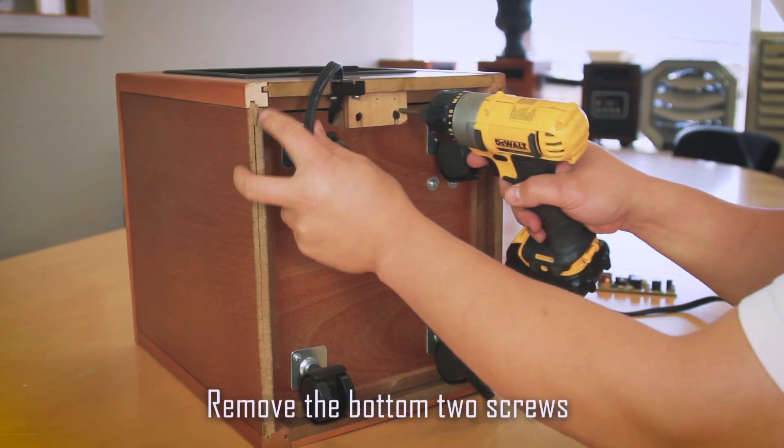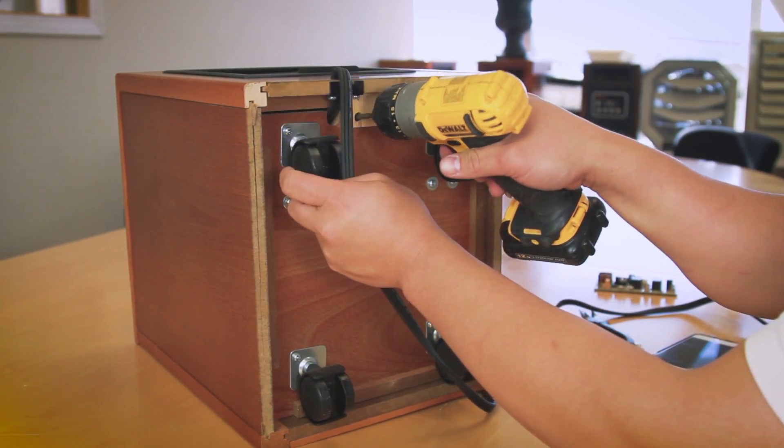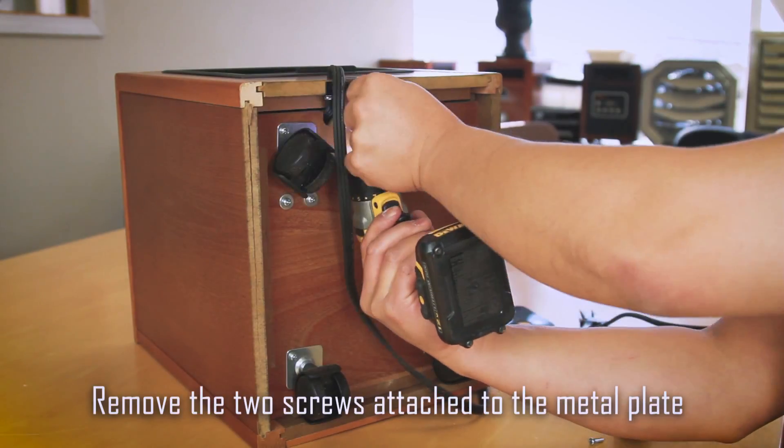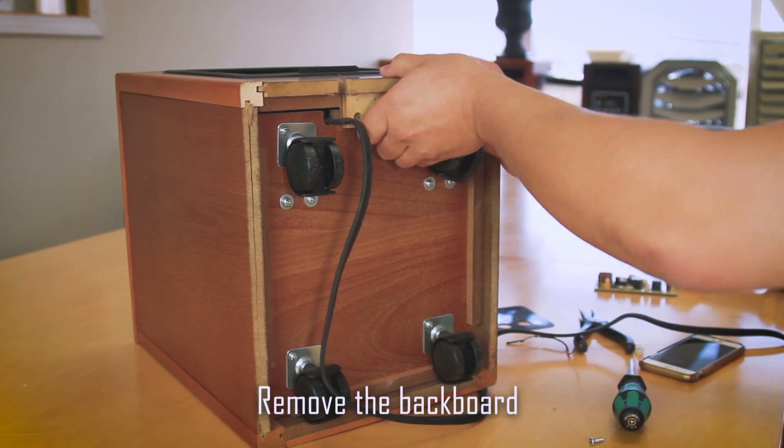Now remove the back cover by removing the two screws on the bottom and the two screws holding the outlet cord. Slide the metal piece off and you should be able to slide the back cover off.